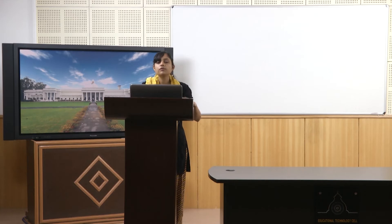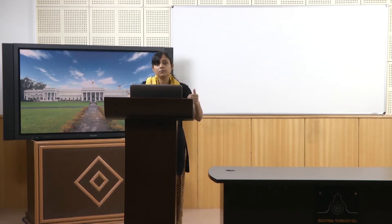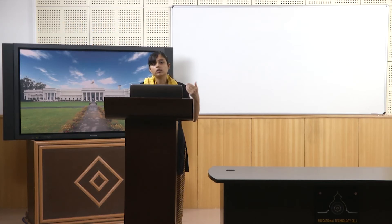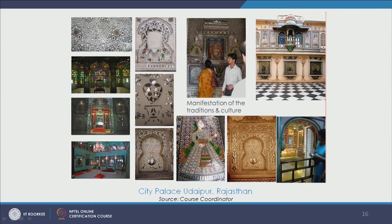If we talk about the several art and craft forms that we can see inside City Palace Udaipur, the few of prime importance are: glass work, mirror work, Meenakari or inlay work (called Meenakari in local parlance), ivory work, carvings both in stone and timber. Then there are lot of paintings, specially the Pichwai paintings — Pichwai paintings are very famous and their origin is Rajasthan, and they have been shared and talked about for their subject, content, and expressions. There is also ceramic and tile work that we see in this palace.